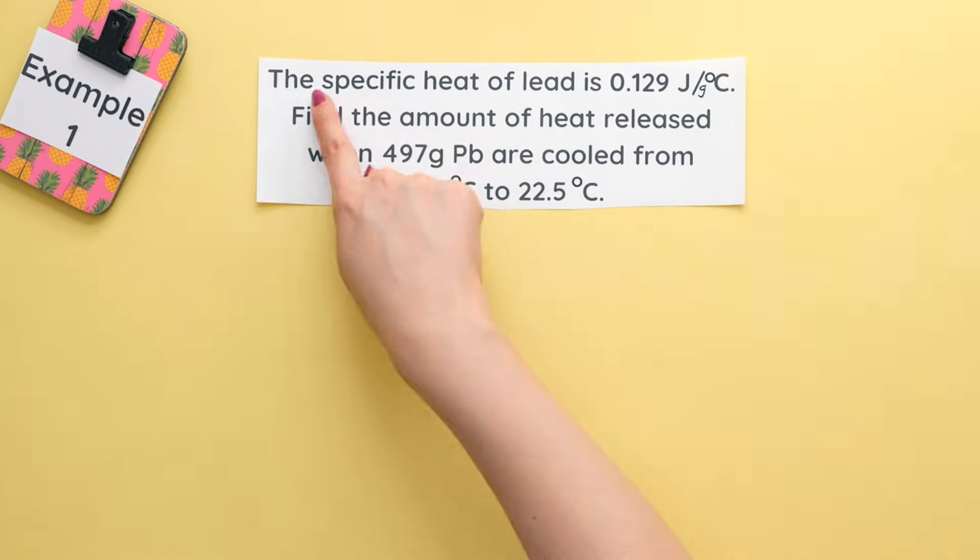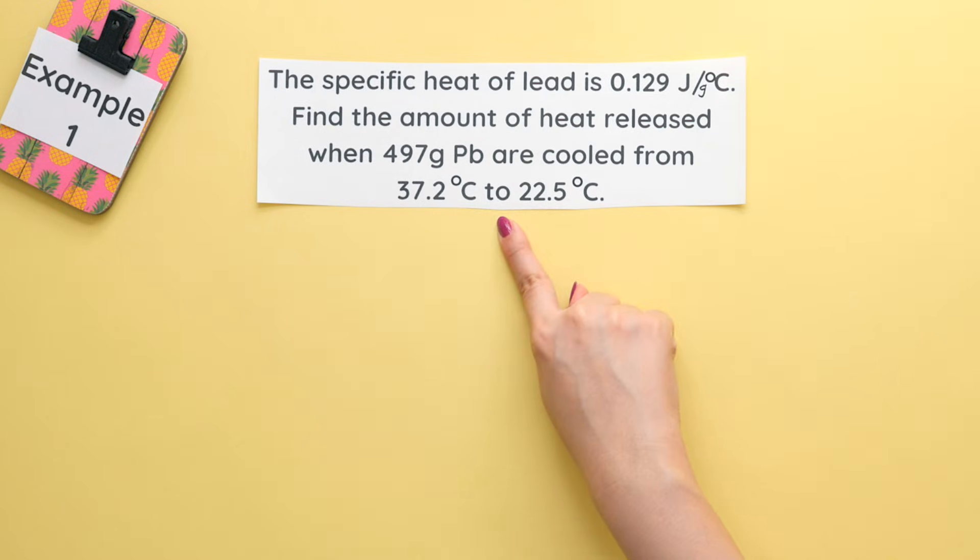Now let's do two different examples, one finding heat and the other finding specific heat capacity. Example 1: The specific heat capacity of lead is 0.129 joules per gram Celsius. Find the amount of heat released when 497 grams of lead are cooled from 37.2 degrees Celsius to 22.5 degrees Celsius.